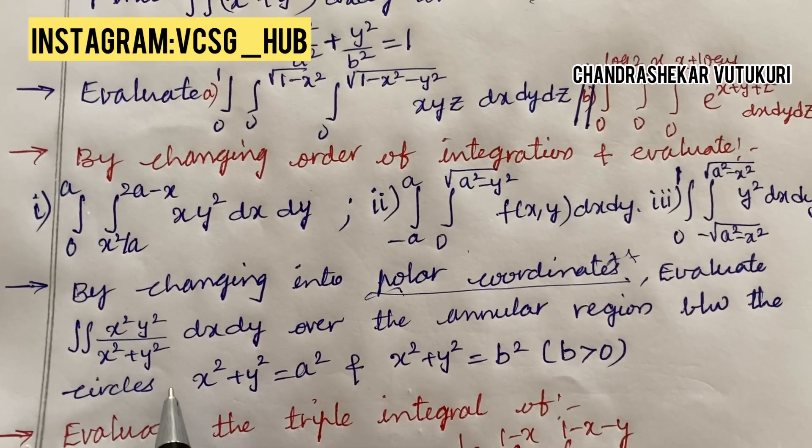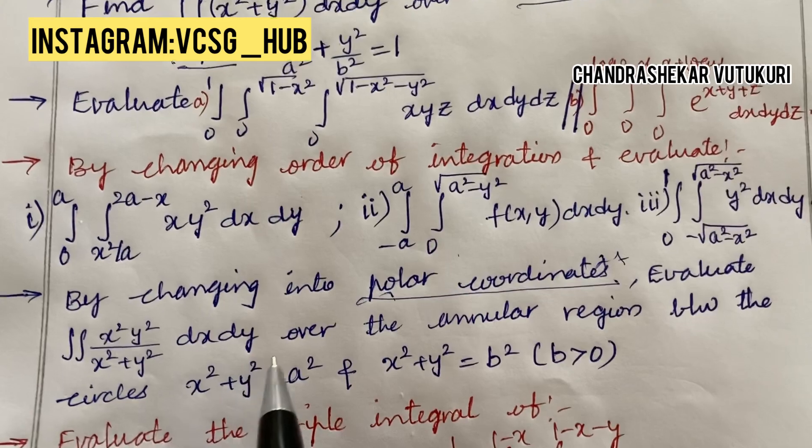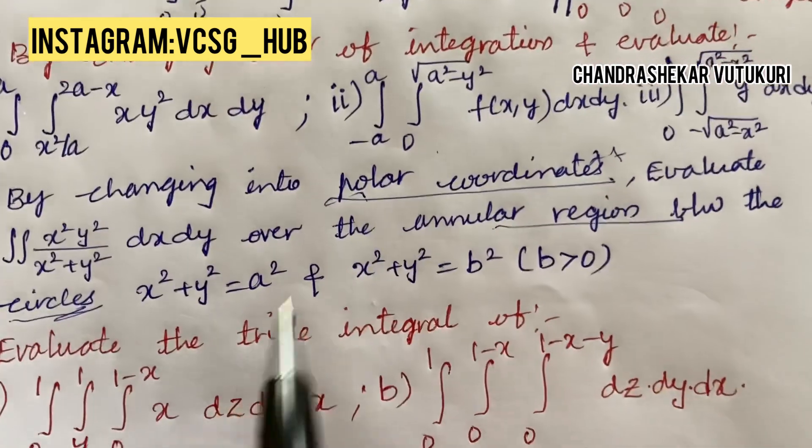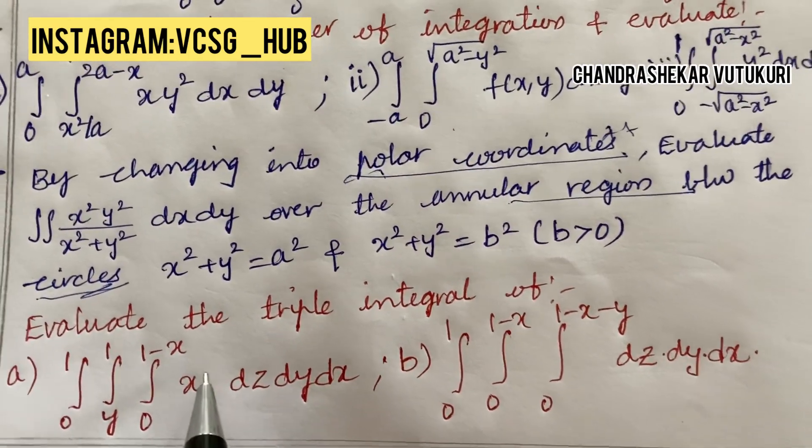By changing into polar coordinates is a topmost question. One short question: evaluate double integration of x²y²/(x²+y²) dx dy over the annular region between the circles. Such problems are sure in the question paper.